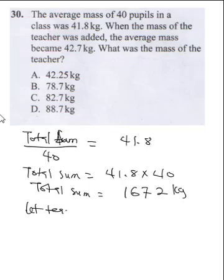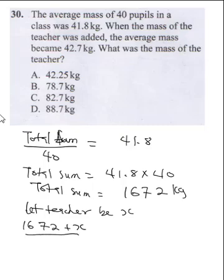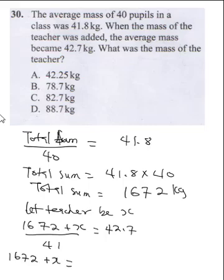Let the teacher's mass be x. So it's going to be 1672 plus x, divided by 41 — recall you used 40, now plus the teacher makes 41. It says when the teacher was added the average mass became 42.7. So this gives us 1672 plus x divided by 41 equals 42.7.